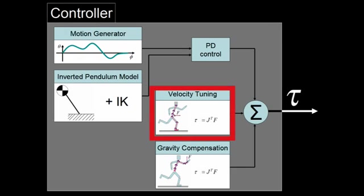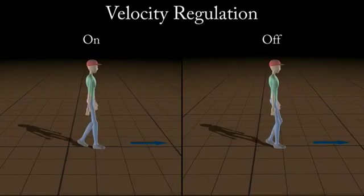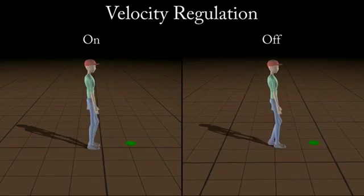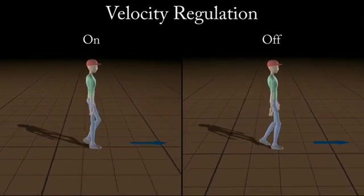Velocity tuning is used to maintain the desired walking velocity with much greater precision. When it is turned off, the character has difficulties walking in place or at steady state.